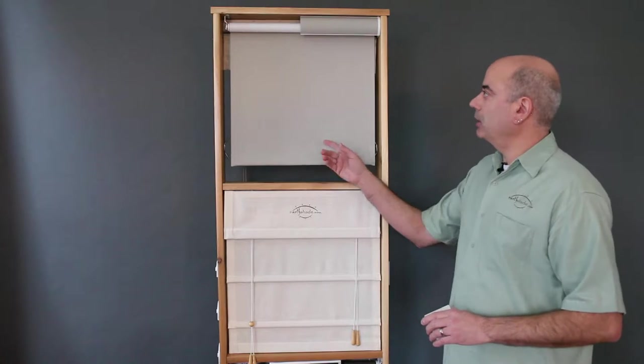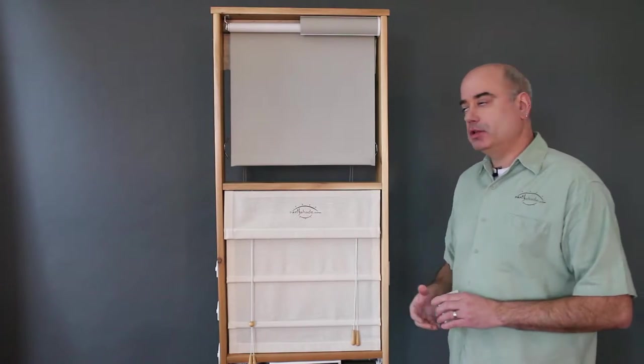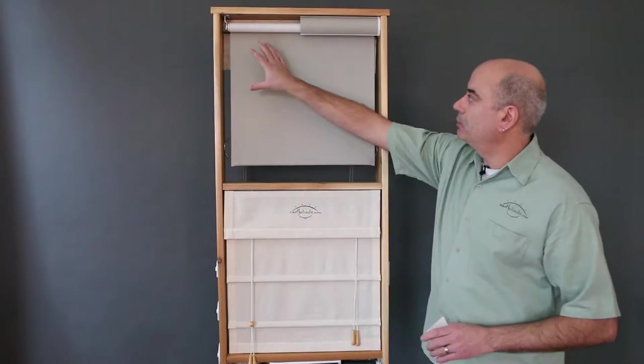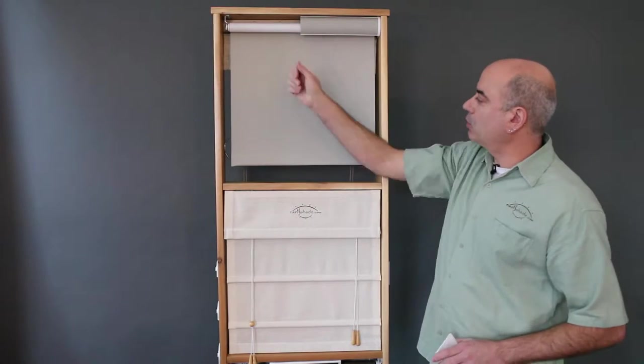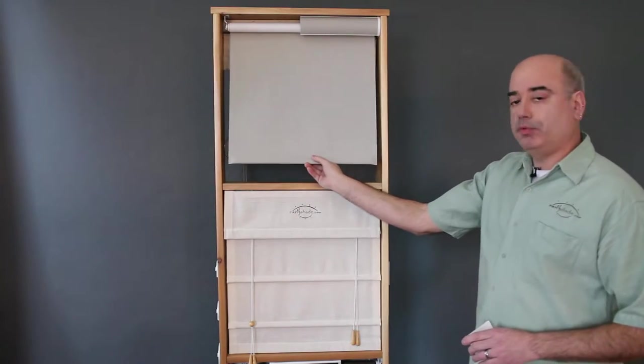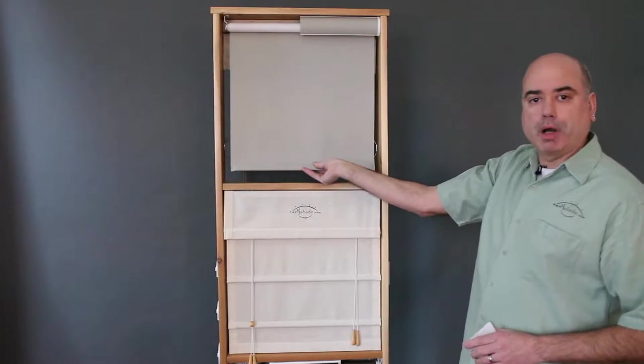First we're going to talk about our SafeTec Spring Roller Shade. This is a child safe option that is cord free. It's available with and without a cassette feature that hides the roller tube, and it features a very simple flick of the wrist operation from the bottom up.